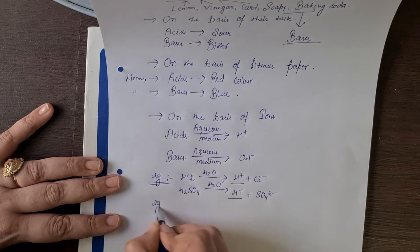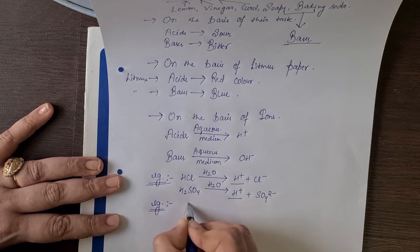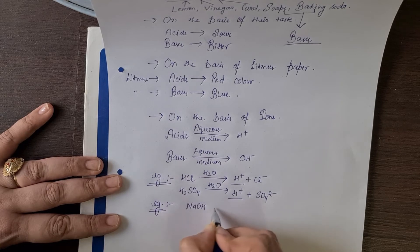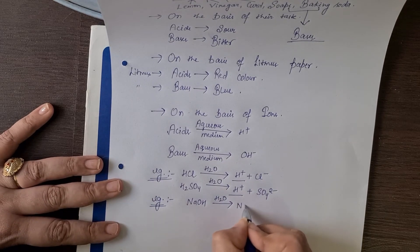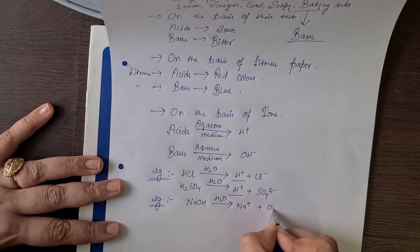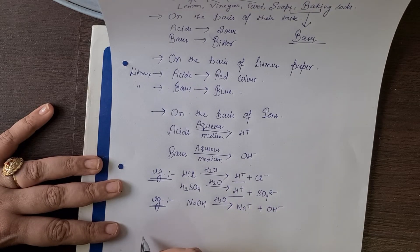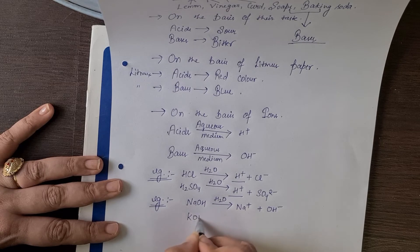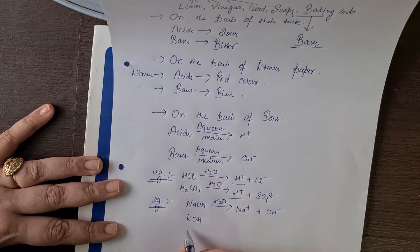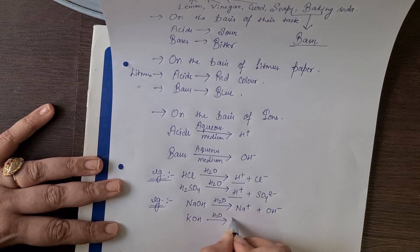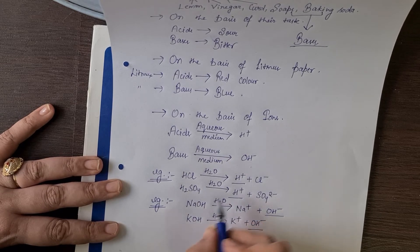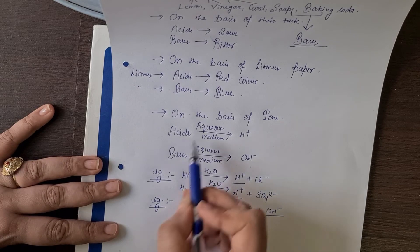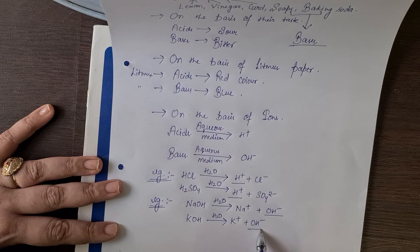Now, examples of some bases. NaOH — when NaOH reacts with water or aqueous medium, it gives Na positive ions and OH negative ions. Another example is KOH, potassium hydroxide — the first was sodium hydroxide. KOH gives K positive and OH negative. So acids give H positive ions and bases give OH negative ions.